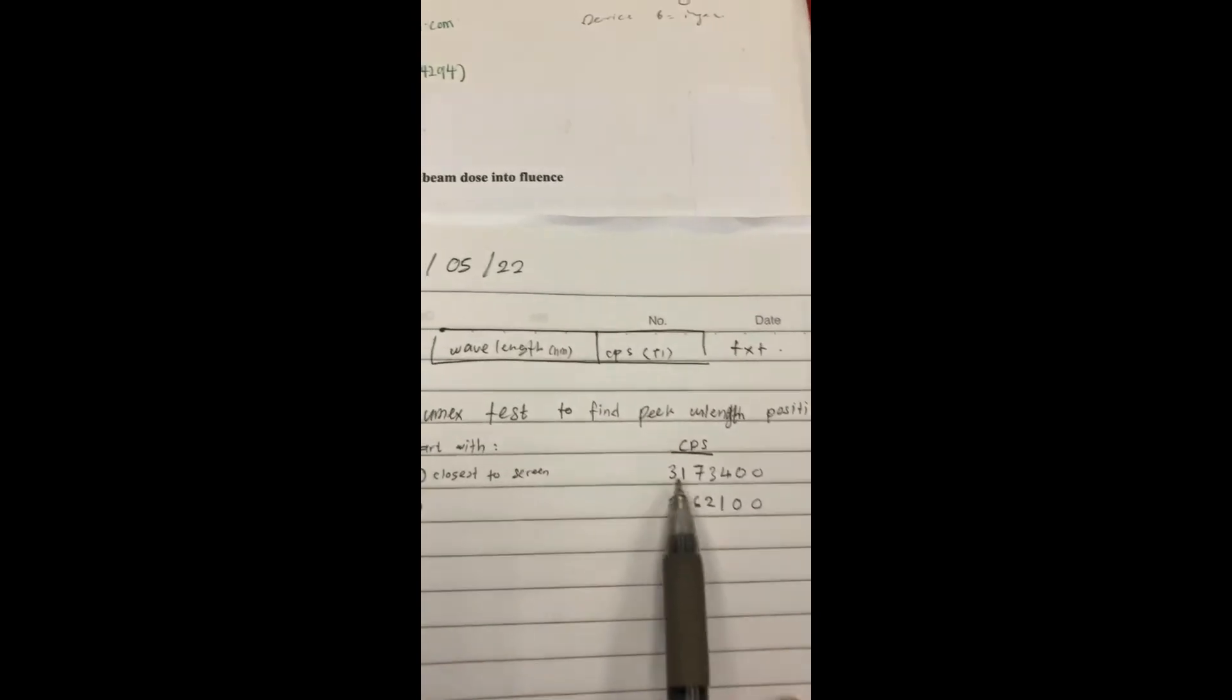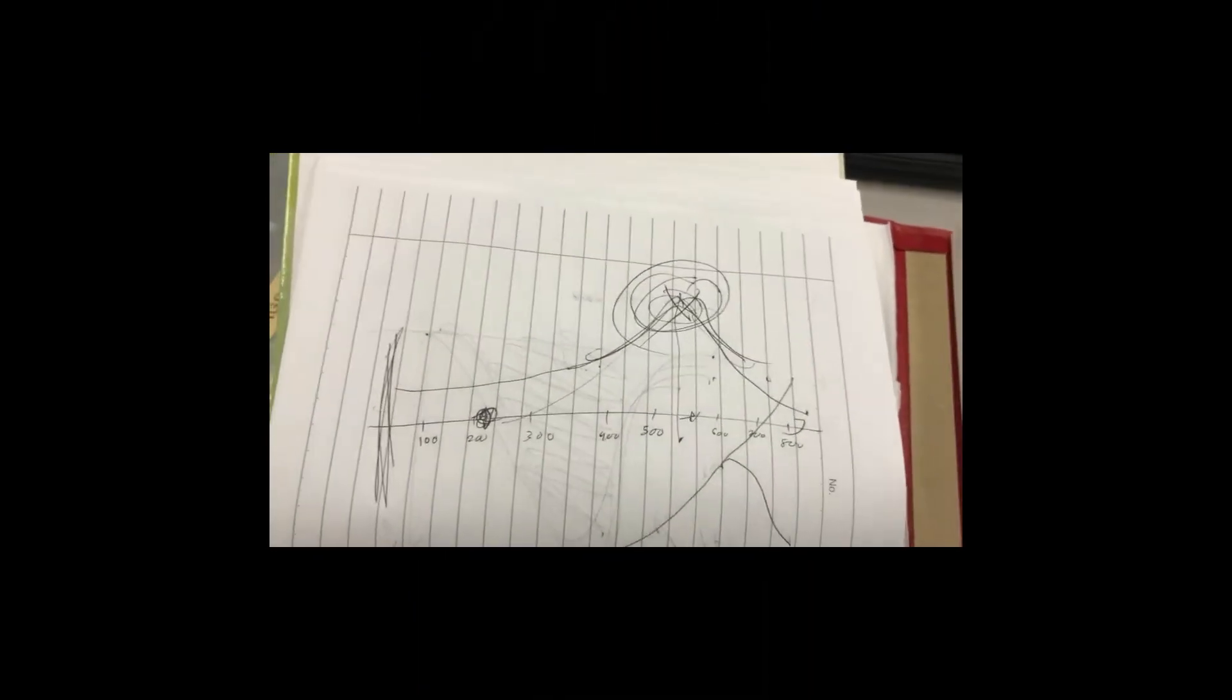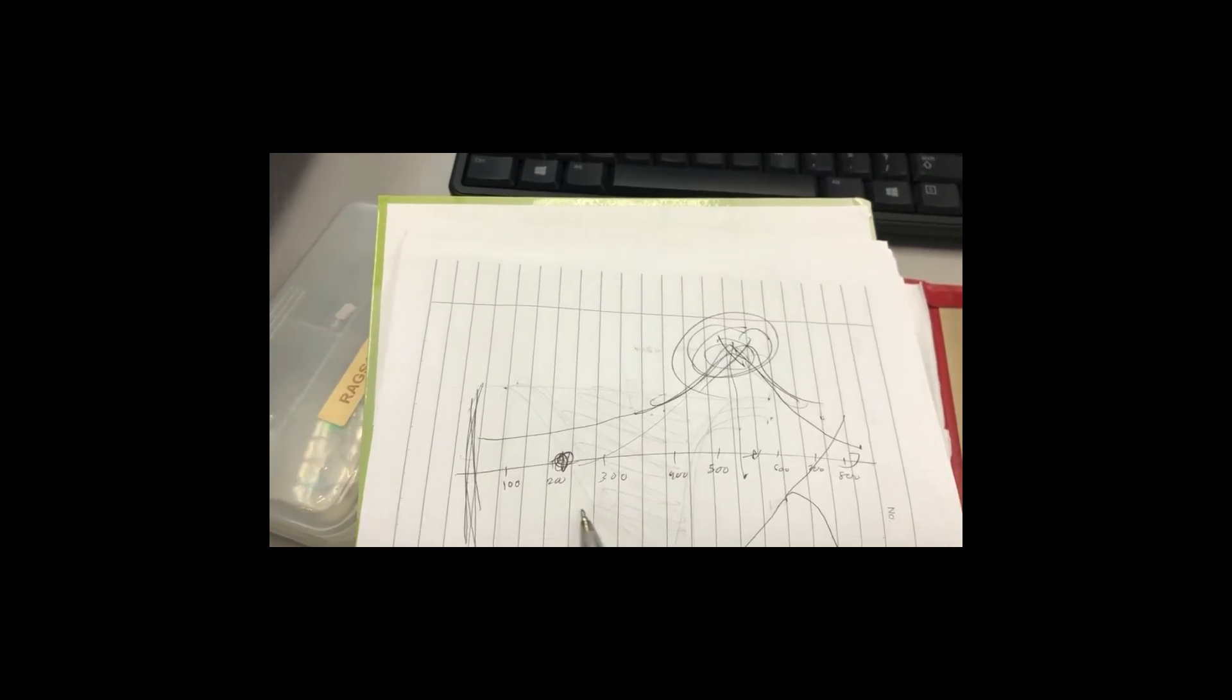Why does the value increase? This is why. As you can see here, just now we tested with the Horiba with the full range from 200 to 800, right? So the graph will look like this.